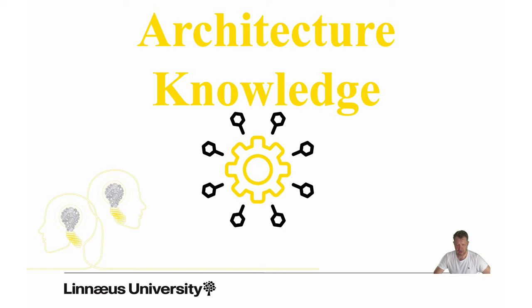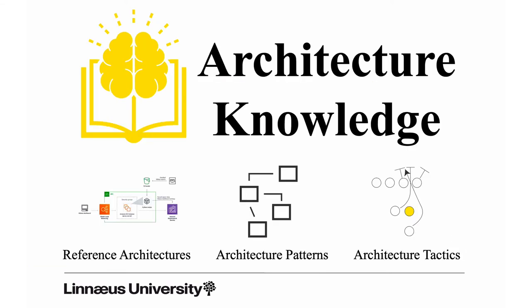Architectural knowledge is a collection of various types of information about design options at the architectural level and the consequences of these options — similar to a design pattern but at the architectural level. We also have reference architectures and tactics. An architecture tactic — illustrated here as a game play, an instruction for how to conduct a certain action — can be a regular pattern or an architecture pattern, but can also be more specific behavior. We will return to this in the next theme.